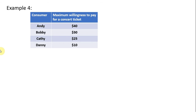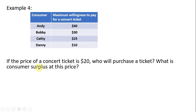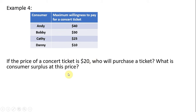Example four: we have a market with four consumers and their respective maximum willingness to pay for a concert ticket. If the price is $20, who will purchase a ticket? Since $40 is greater than $20, Andy will buy a ticket. Bobby's $30 is greater than $20, so Bobby will buy one. Kathy's $25 is greater than $20, so Kathy will buy a ticket — she values it more than the price. Danny will not buy, since he only values a ticket at $10, less than the $20 price. So only Andy, Bobby, and Kathy purchase tickets.